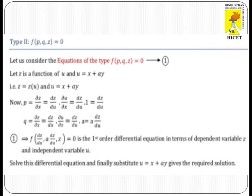Now, Type 2. In Type 2, the equation is of the form F(P,Q,Z) = 0, where P and Q are multiplied with Z. In this case, let Z be a function of U, where U equals X + AY.